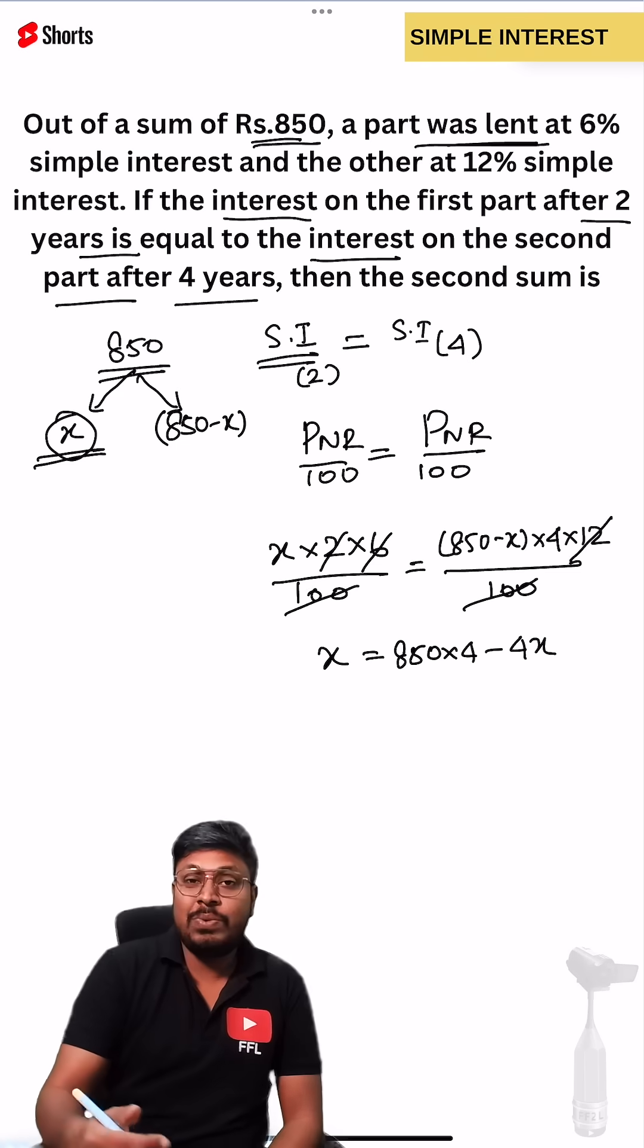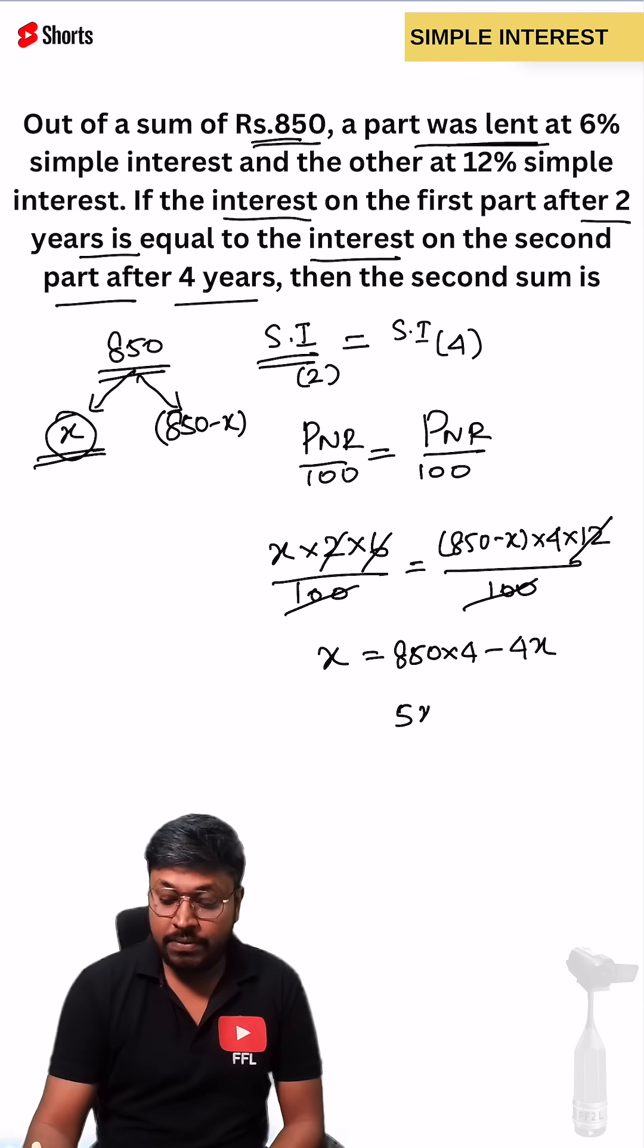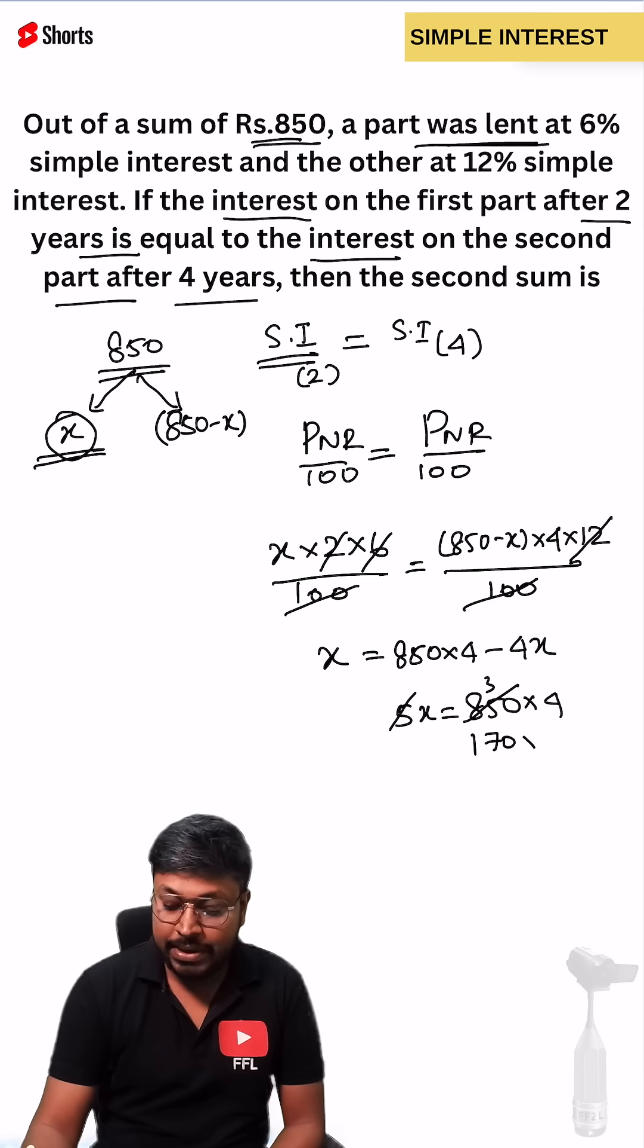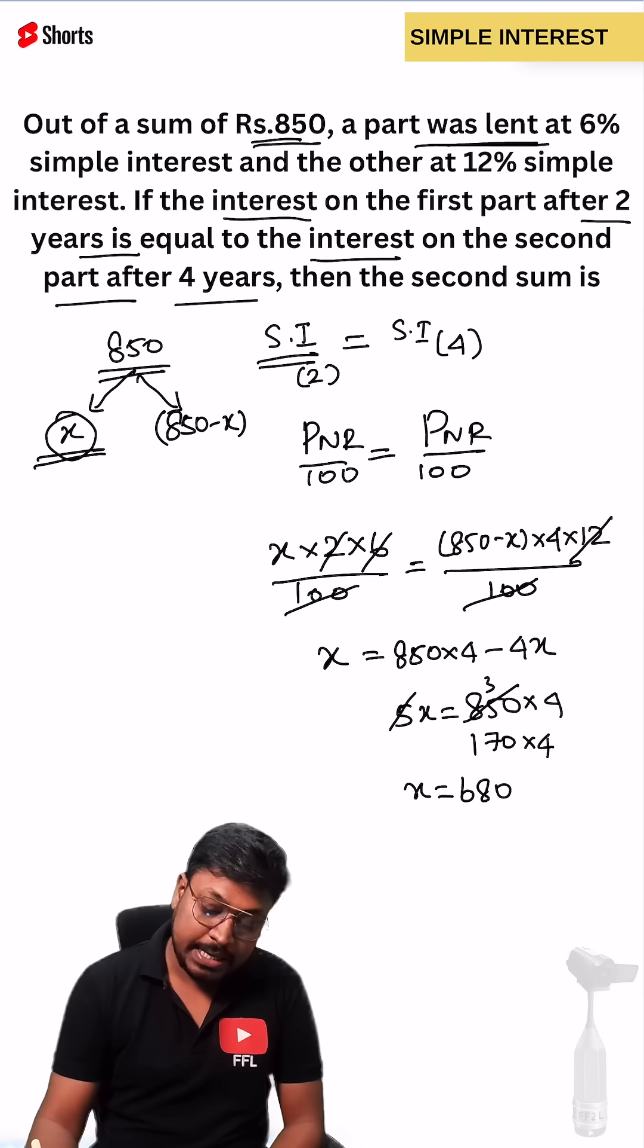Once you bring this 4x towards left hand side which is 5x. So 5x equals 850 into 4. Once you cancel this, 5s are 5 remaining will be 3. 7 5s are 35, 170 into 4. So x equals 680.